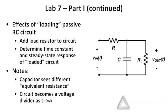Also, the addition of that load resistor is going to cause the DC gain of the circuit to change. If you open-circuit the capacitor, V out is going to look like a voltage divider rather than a voltage across an open circuit, as it did for the unloaded circuit.